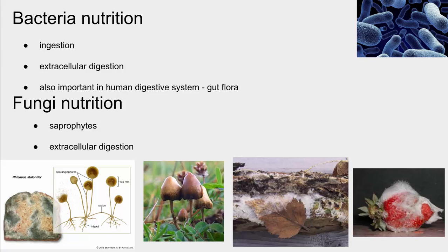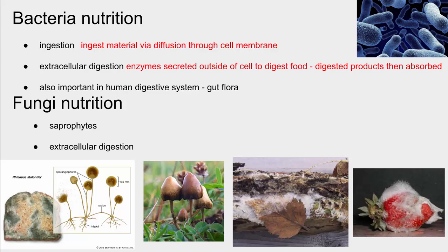So bacteria. Bacteria are really simple — they're a single cell and don't even have any membrane-bound organelles. However, they do still need nutrients. They need to obtain energy and different materials from their environment. The way they do that is really simple: those materials can diffuse right into them through the cell membrane. And if there are larger materials that need to be broken down, bacteria can accomplish digestion. They do it by what we call extracellular digestion — they excrete enzymes out of the cell.